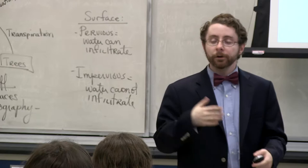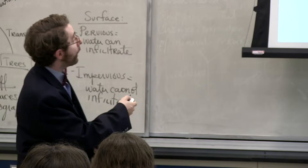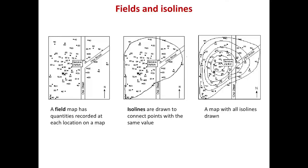I can take a map and, as you saw with the ghost map, put information or data onto it — that is referred to as a field map. A field map is something that has assigned quantities or values to a particular location. In this picture, it's corresponding to the price of gas relative to the service station.